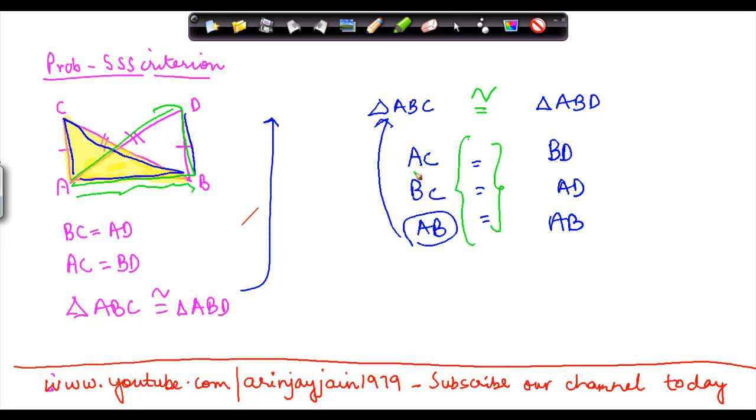Now the thing which one needs to really note here is that should I write this as triangle ABC is congruent to triangle ABD, or should this be written as triangle BAD?